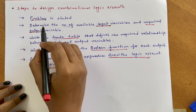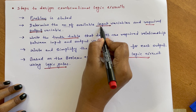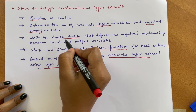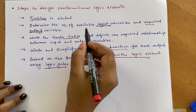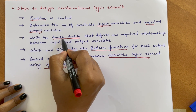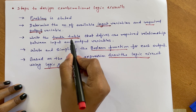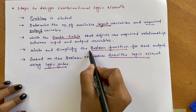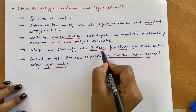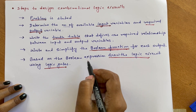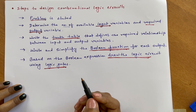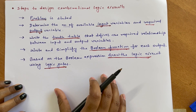To summarize the steps: based on the problem, determine the number of input variables and required output variables. Write the truth table that defines the relationship between the input and output variables. Based on the truth table, write a boolean function for each output variable. This boolean function will help in drawing the logic circuit using logic gates. This is the complete process to design a combinational logic circuit.